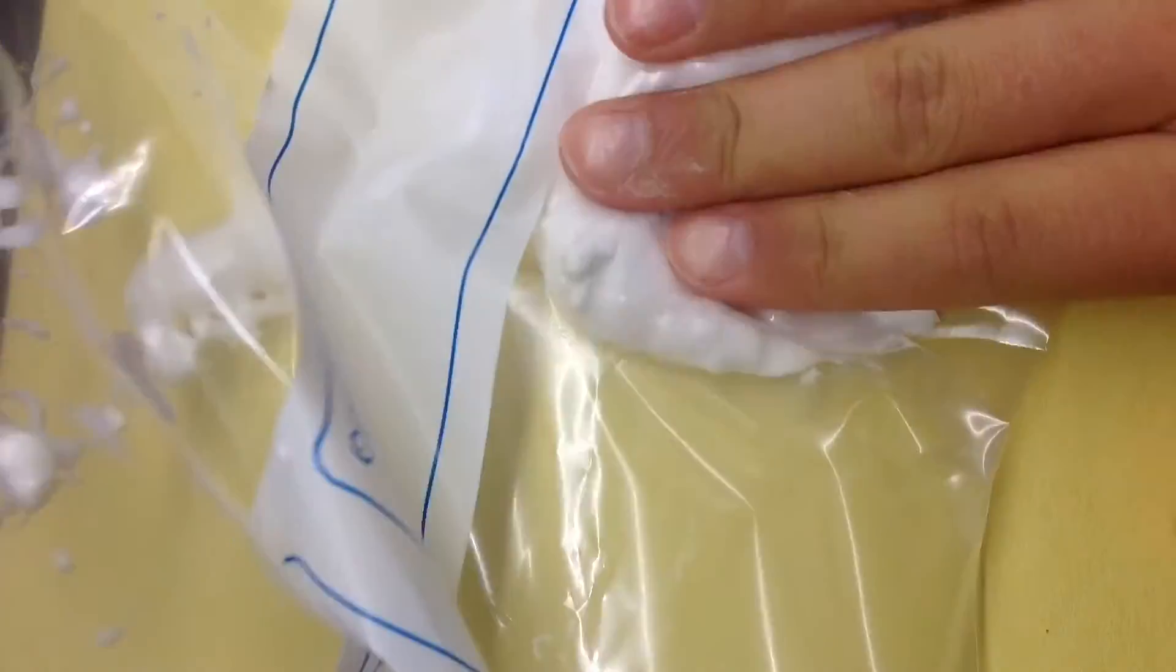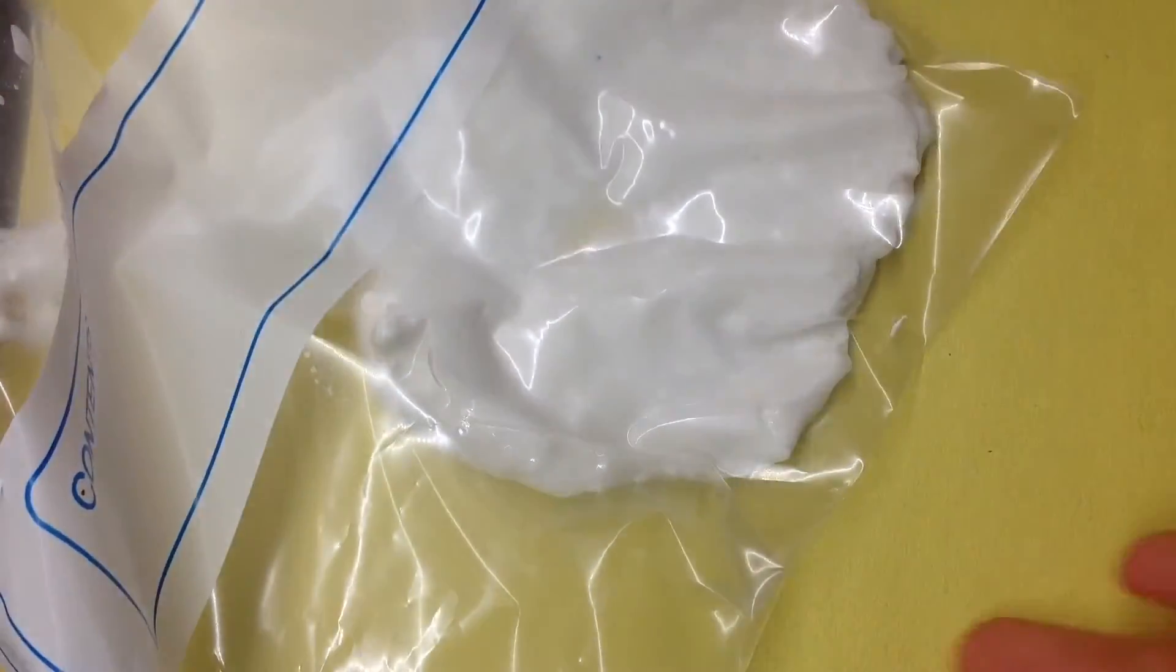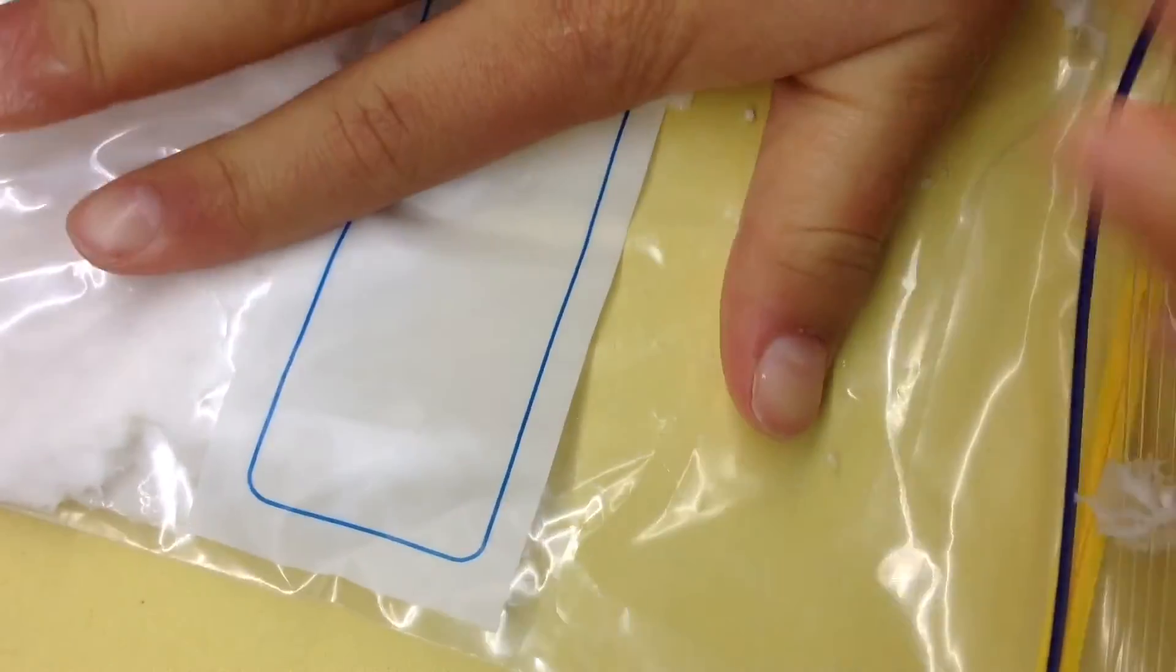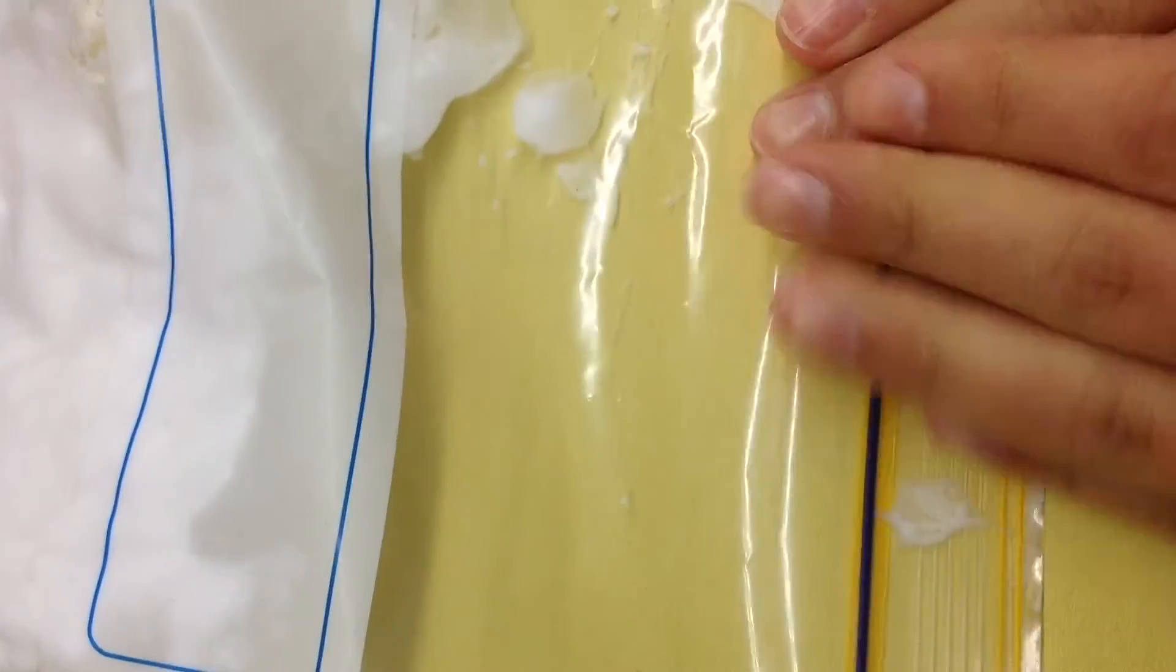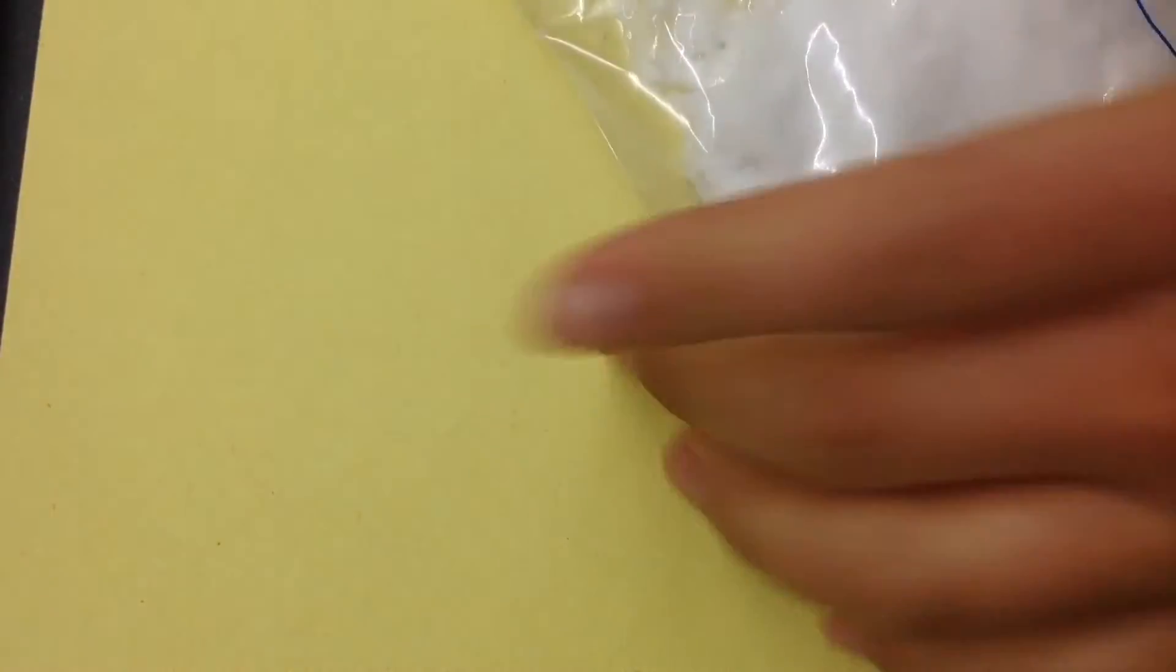You want to grab it like you would a piping bag. I released some air so I had to reopen it, and you might want to do that because you don't want any air in the bag. Then you want to start pushing it down to the edge like you would a normal piping bag.